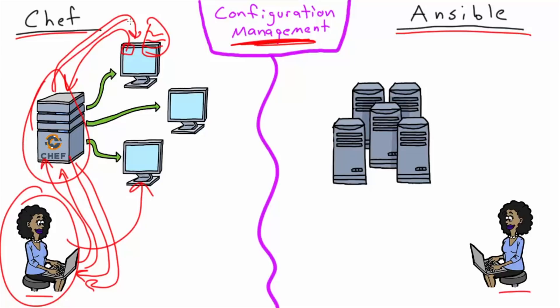She only interacts with the Chef server, and then the Chef server interacts with the Chef client, which reaches out to the Chef server. It's complicated, but it's very robust — you can have multiple Julies all working on the Chef server, contributing code and working together on a large infrastructure.